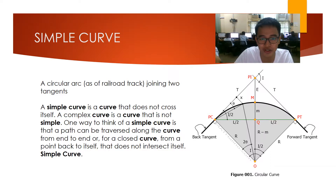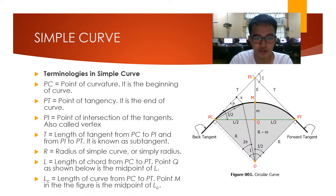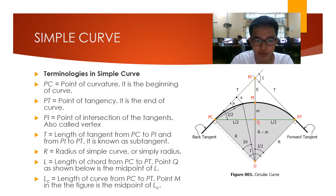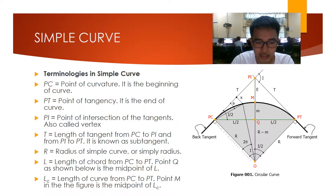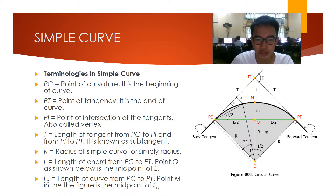We already have a figure on our slide showing the terminologies of a simple curve. PC, marked in red on the left of the figure, is the point of curvature — the beginning of the curve. PT is the point of tangency — the end of the curve. PI is the point of intersection of the tangents, also called the vertex, found at the upper part of the figure. T is the length of the tangent from PC to PI and from PI to PT, also known as the sub-tangent. R is the radius of the simple curve, and L is the length of curve from PC to PT.